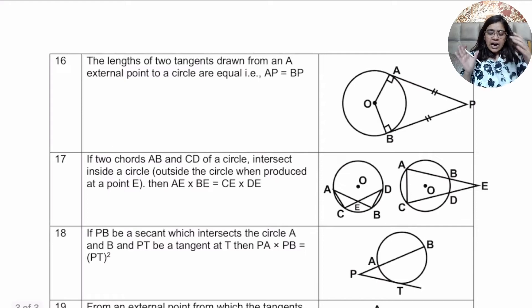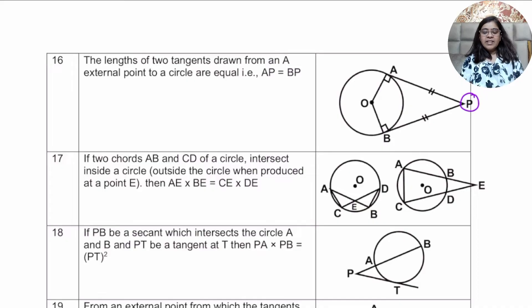If two tangents are going out of the circle and meeting at an external point T, then the length of the external part of the tangent will be equal. That is, AP is equals to BP.